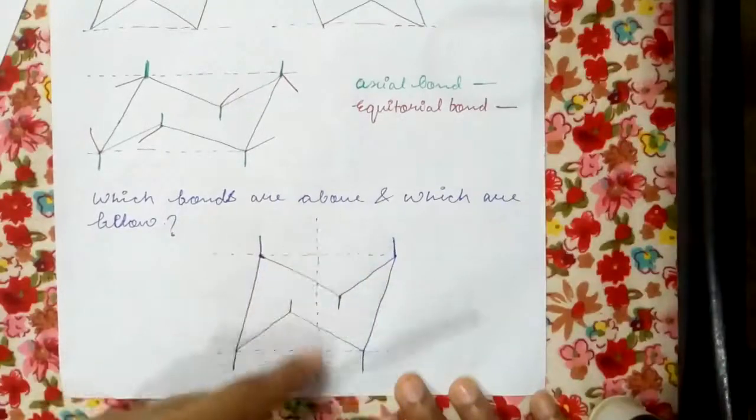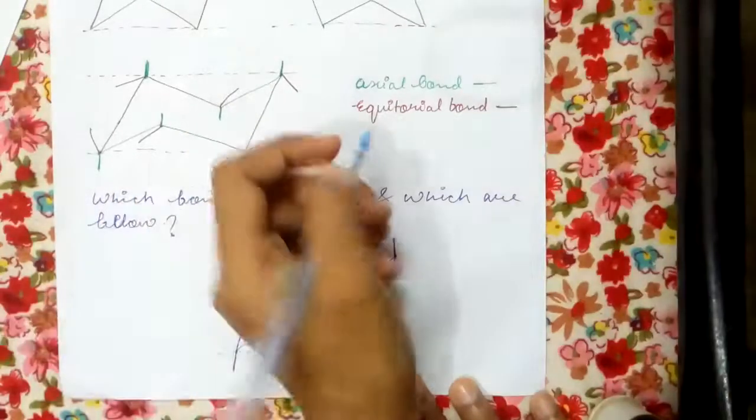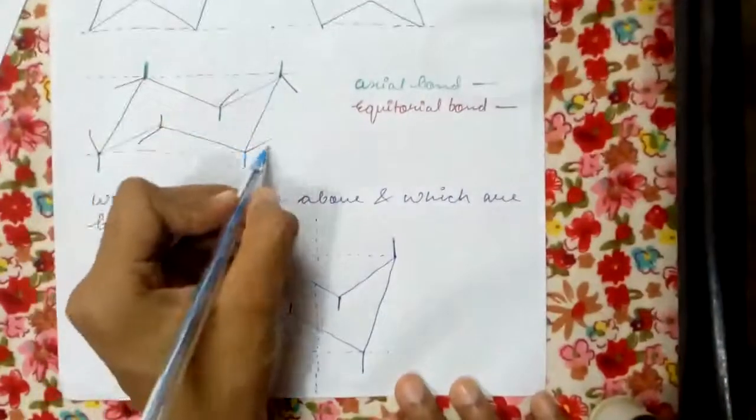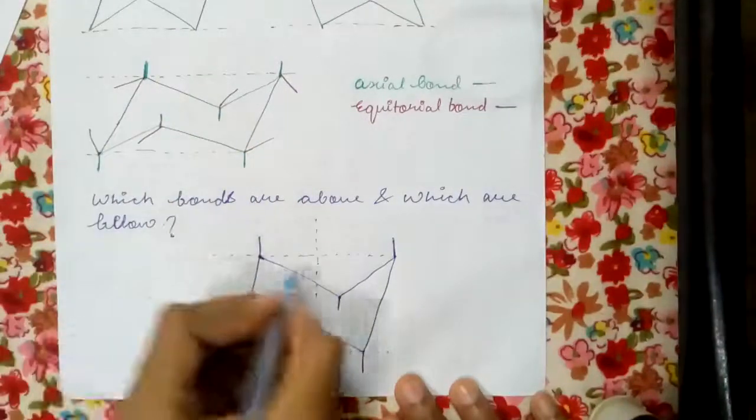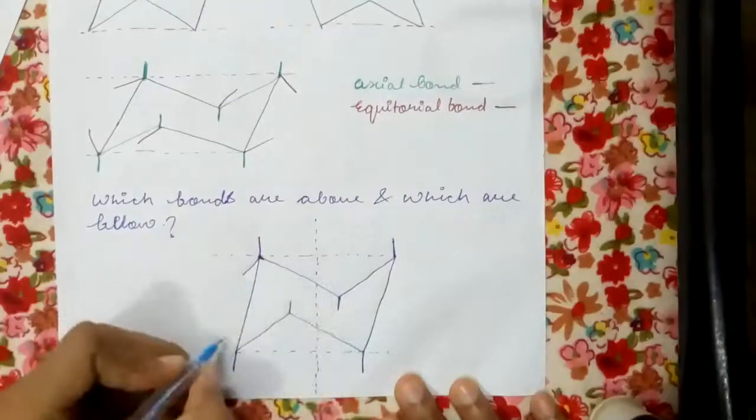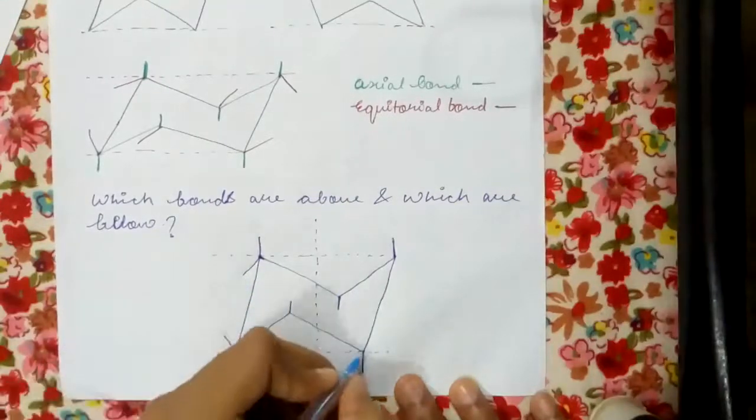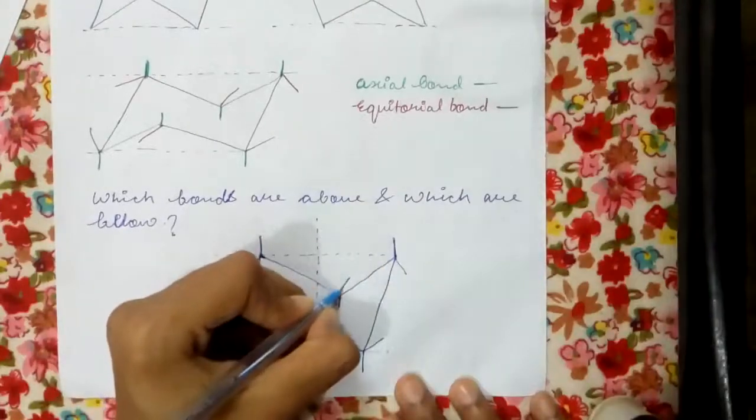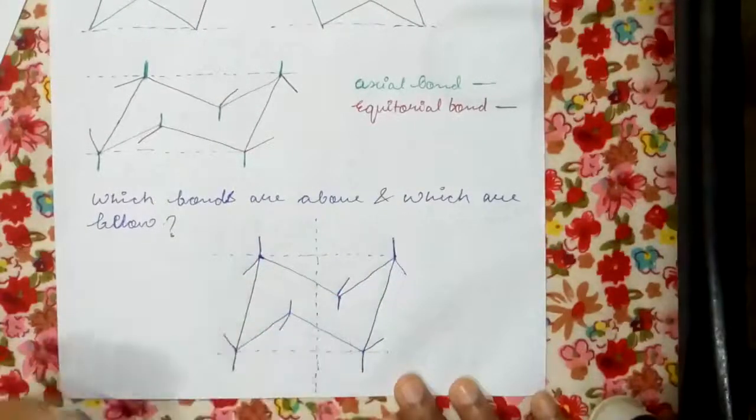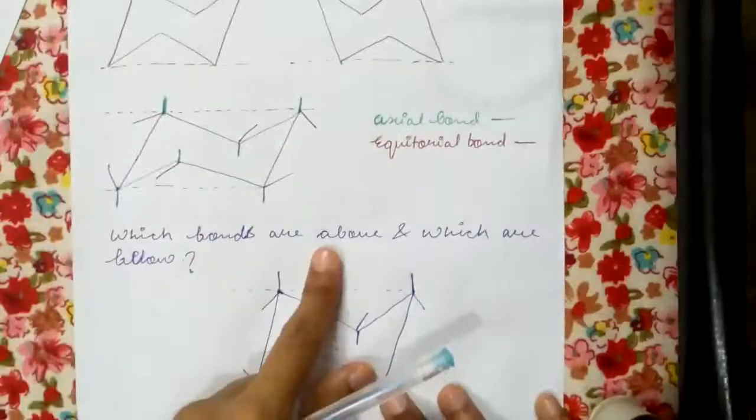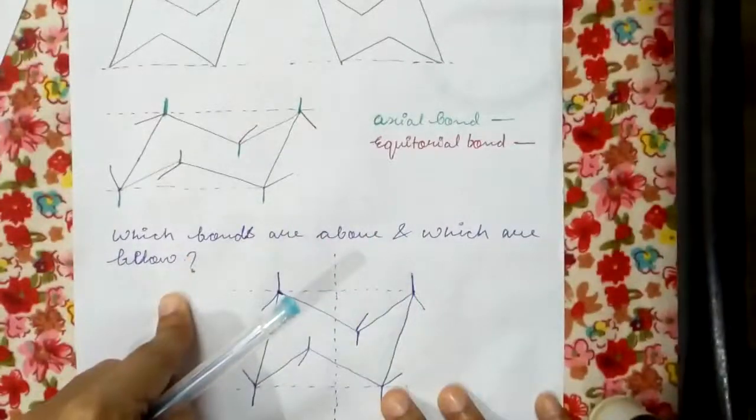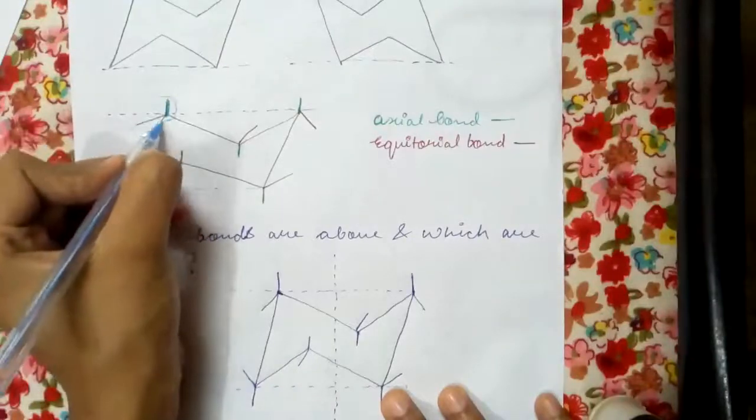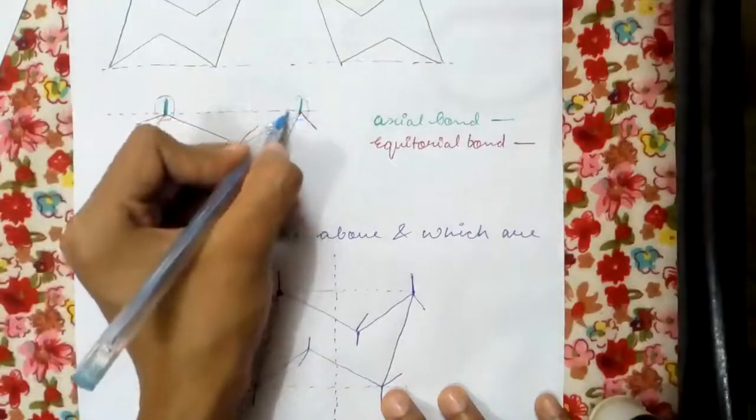Next comes the equatorial bond. The ones marked with red are equatorial bonds. It is very easy to draw these also. Now which bonds are above and which bonds are below? It is very easy - see, the ones which are lying above are above.